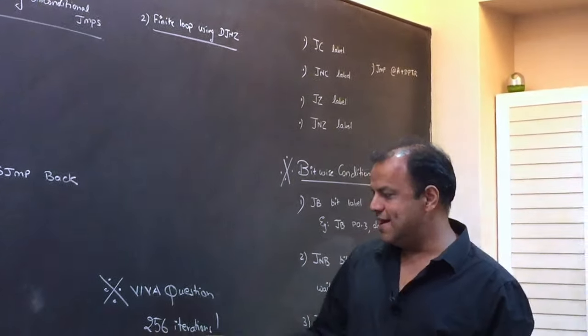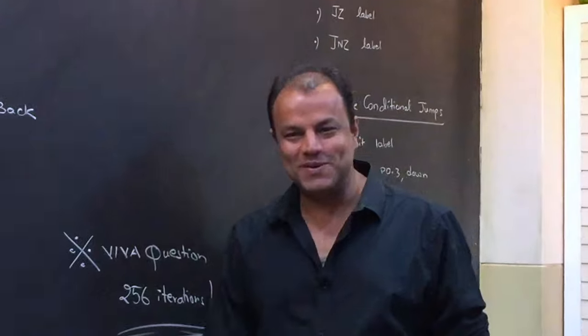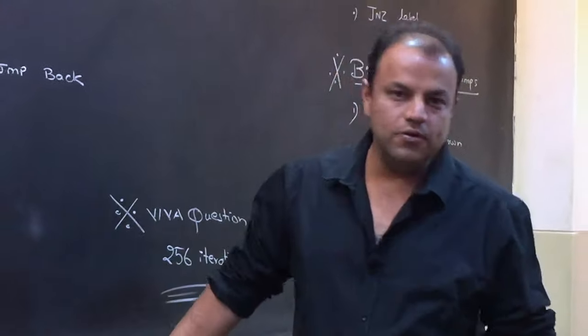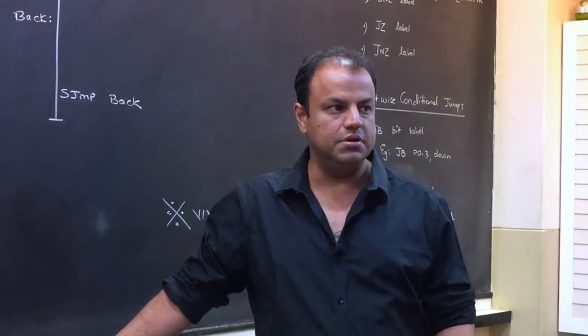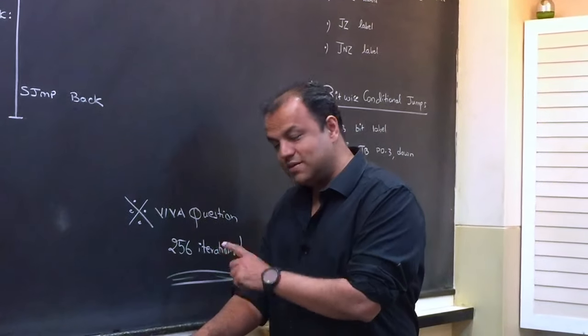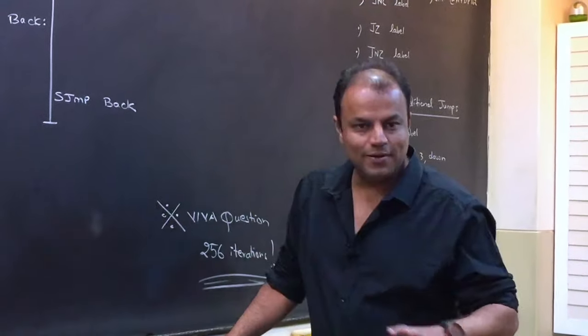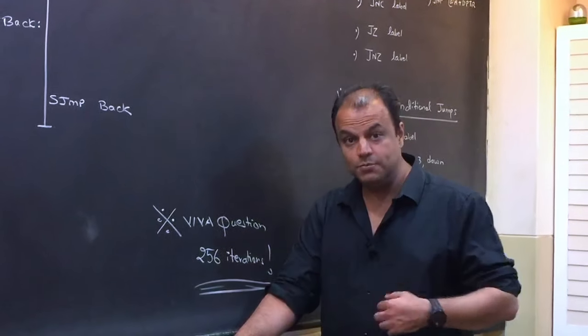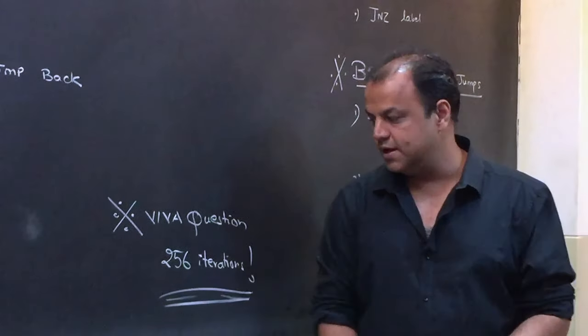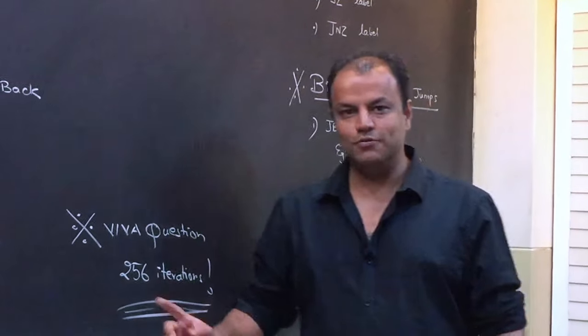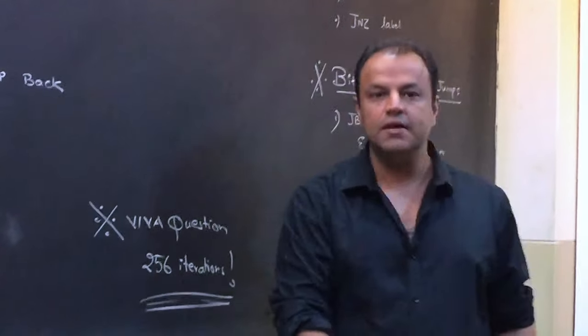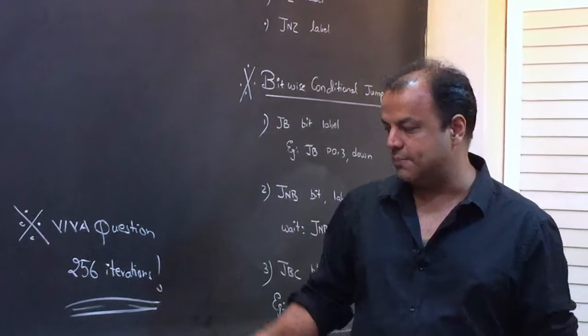And then there's a superb viva question: how to generate 256 iterations using an 8-bit register. I don't know which question you'll get in viva, the subject is huge. It's anybody's guess what can be asked. But if you get this question and you are able to answer this, you have won your battle with the examiner. You impress the examiner. If somebody gives this answer to me when I'm taking a viva, I know this student knows the subject properly. Because this is not an answer that you find in textbooks. This is an answer which either you really think hard and get, or you've done a lot of programs.